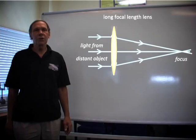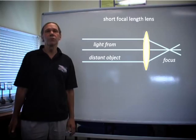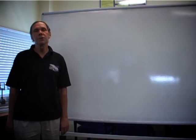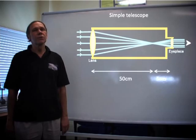A weak lens deviates light only slightly, so has a long focal length. A strong lens deviates light far more, and has a short focal length. We could make a simple telescope that magnifies by lining up a long focus lens with a short focus lens nearest to your eye.